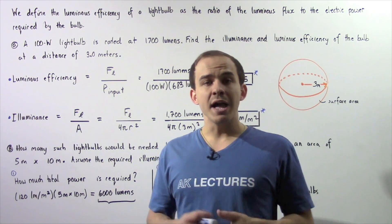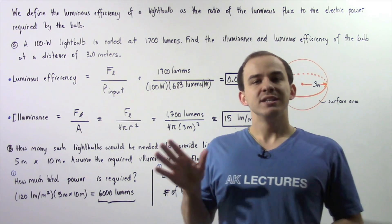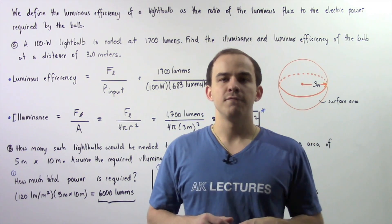So we can estimate that we require about 4 bulbs to light our floor of the room.